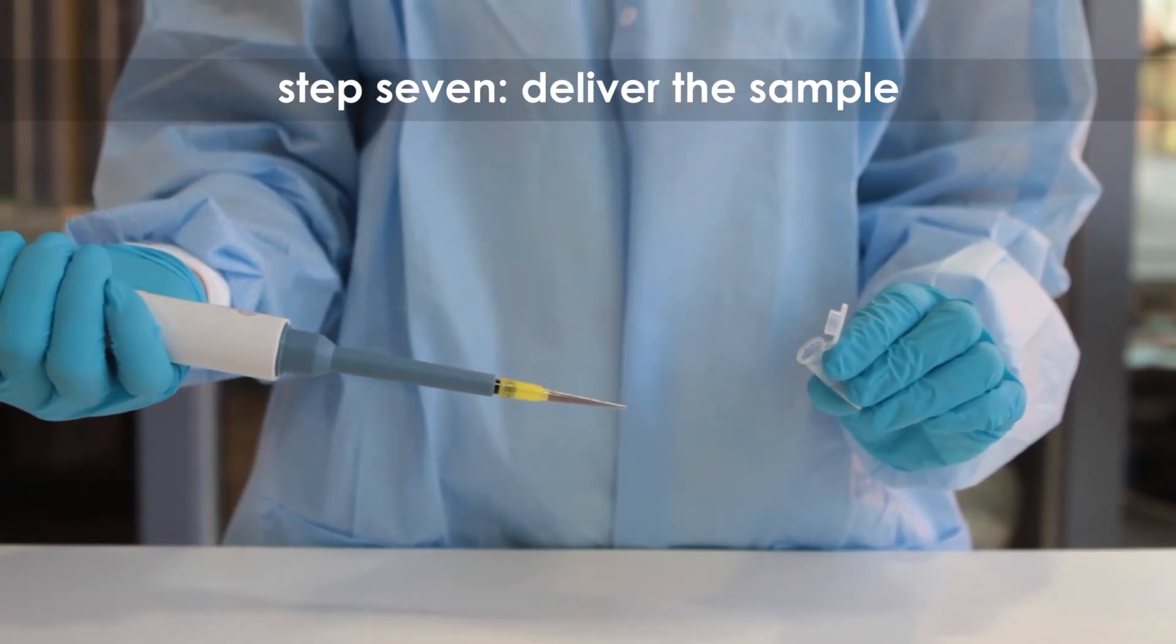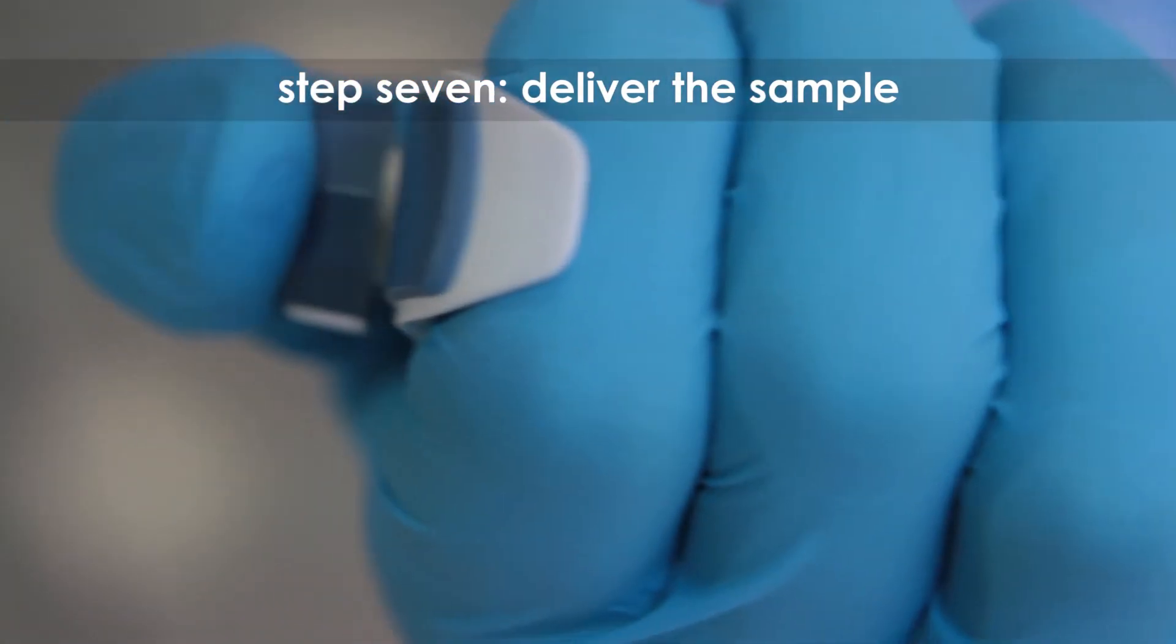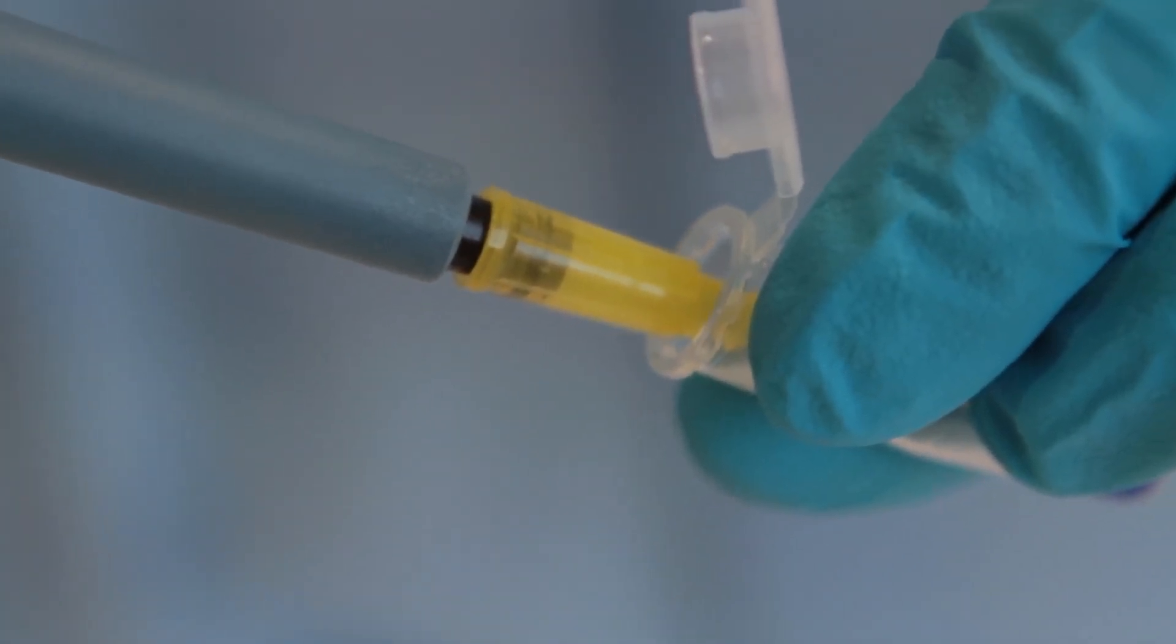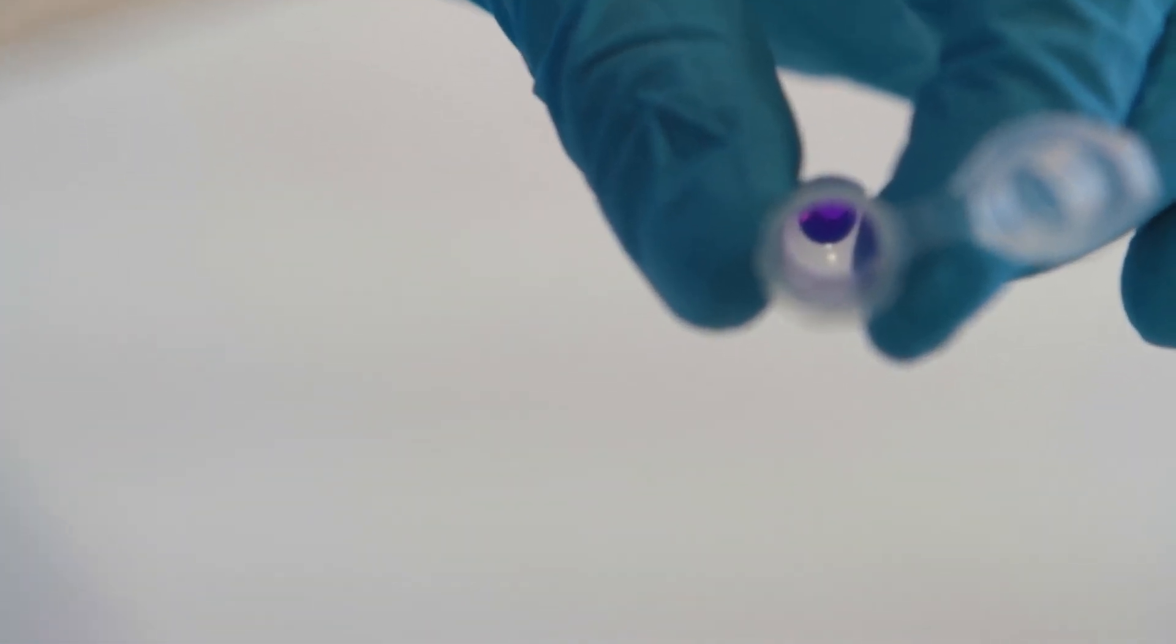Step 7. Deliver the sample by slowly pressing the plunger to the first stop. Depress the plunger to the second stop to expel any remaining sample. Do not release the plunger until the tip is out of the sample container.